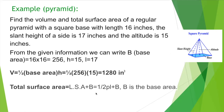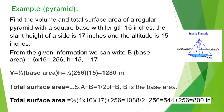Total surface area equals lateral surface area plus base area. Lateral surface area equals one half times perimeter times L: one half times 4 times 16 times 17 equals 544. Then 544 plus 256 equals 800 inch squared. That is the surface area covering all four sides plus the bottom base.